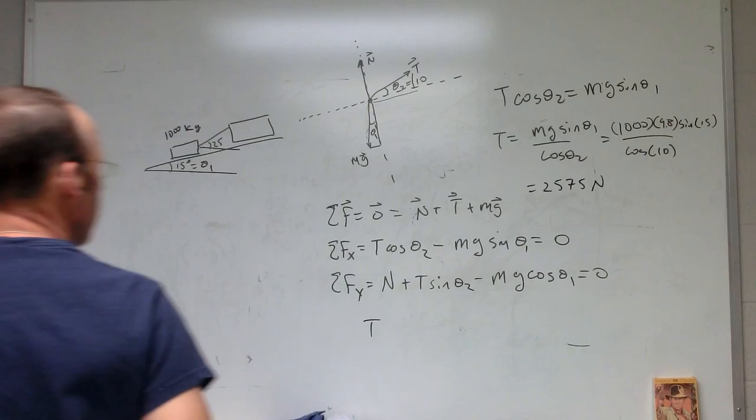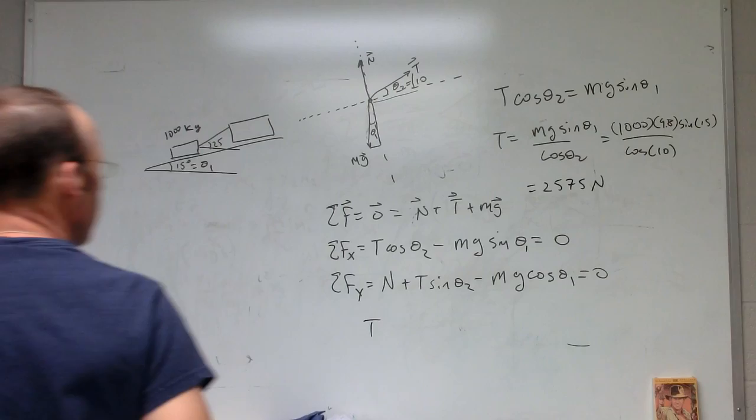Which is much less than the weight, right? The weight of the car is 1000 times 9.8, so 9800 newtons. So this is less than the weight. There you go—that's the tension in the rope.